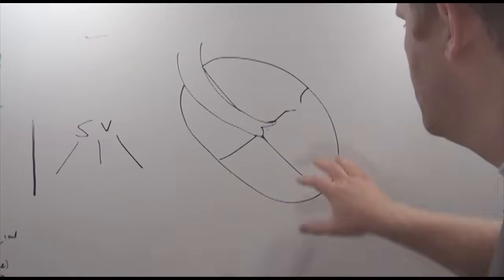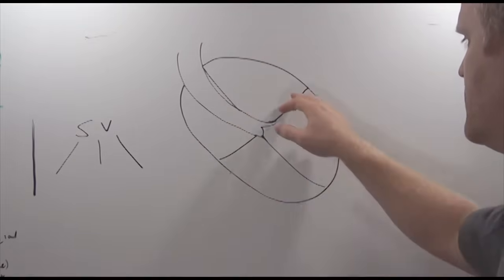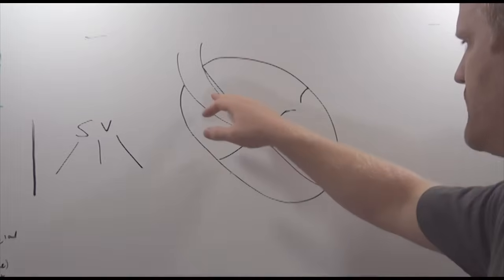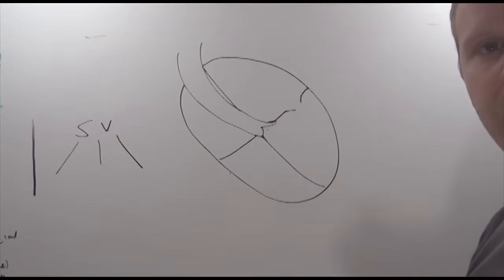So to start, here's our heart. We have our atria on top, ventricles on bottom, here's our mitral valve, and here's our aortic valve, and this is going to be the aorta pumping blood out to the body.